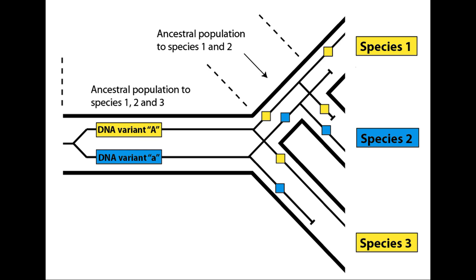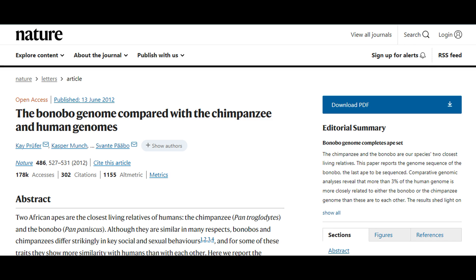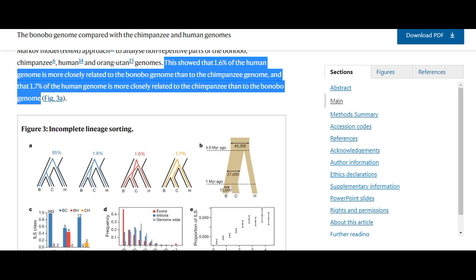In other words, not all alleles in a species converge or coalesce right at or close to the last common ancestor. Some alleles are shared between closely related species. That's why about a third of the gorilla's genome is more similar to either chimps, bonobos, or humans than to the others. Or, in our case, according to a 2012 paper we referenced in the previous video, this showed that 1.6% of the human genome is more closely related to the bonobo genome than to the chimpanzee genome, and that 1.7% of the human genome is more closely related to the chimpanzee than to the bonobo genome.